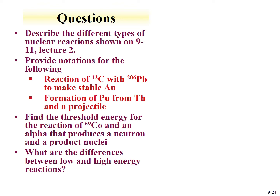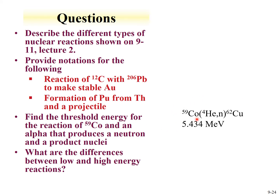As an example: find the threshold energy for a reaction of cobalt-59 with an alpha particle that produces a neutron and a product nucleus. The notation: cobalt-59 with an alpha projectile yields a neutron and the product. Going two Z higher than cobalt gives copper. With an alpha adding four nucleons minus one neutron emitted, the mass increases by three. Using the Q-value calculator, the threshold for this reaction is 5.4 MeV.